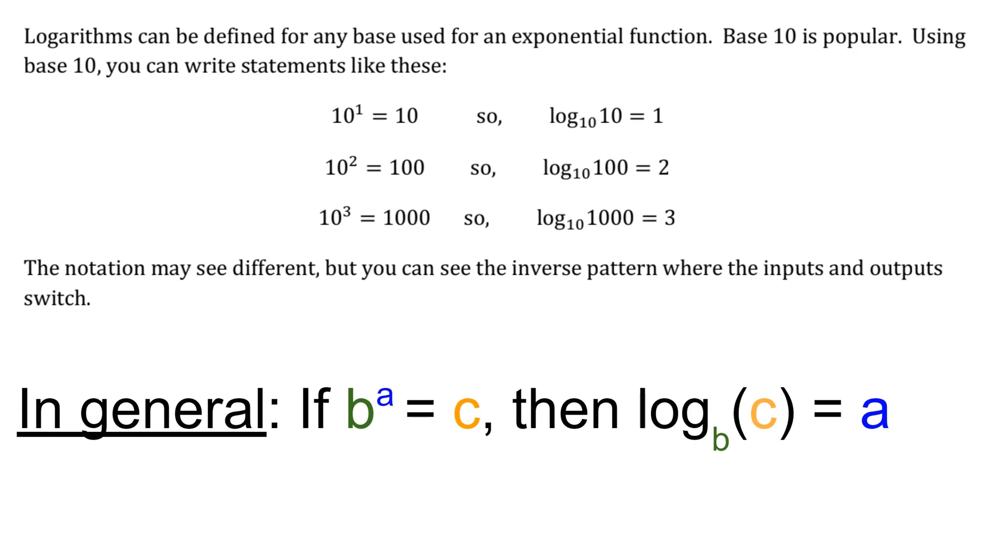In general, you can see this pattern summarized by this statement. If b to the a power equals c, where a is the input and c is the output, then that means that the log base b of c equals a, where now c is the input and a is the output. In other words, the simplest way to keep it in mind is that when you're switching from exponents to logarithms, the inputs and outputs get switched and the base stays as the base.